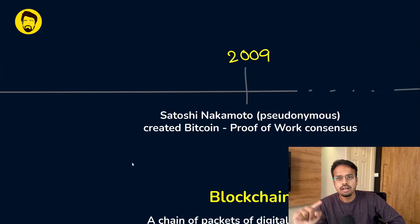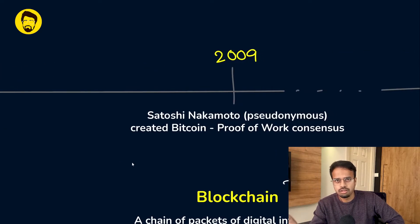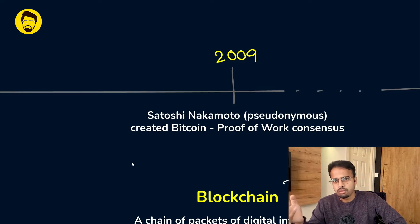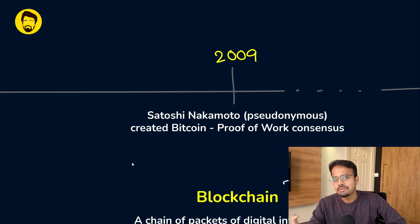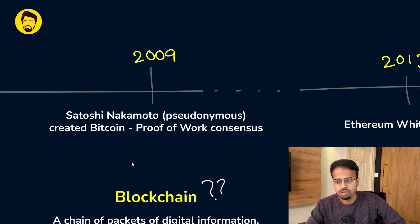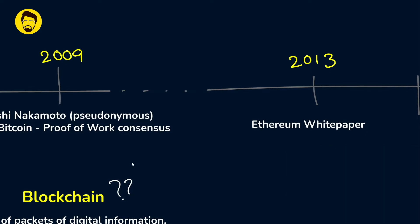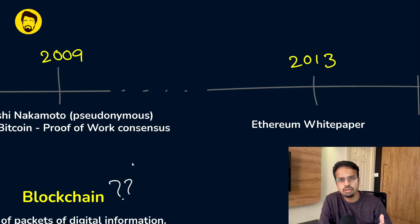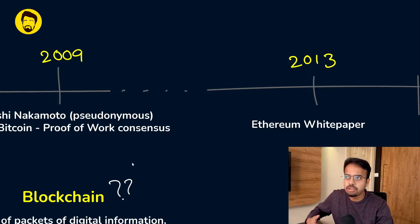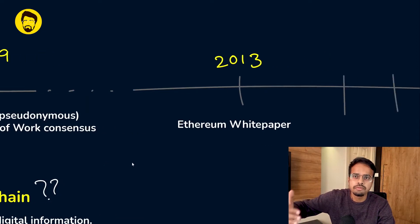Then in 2009, a pseudonymous person or group of people called Satoshi Nakamoto launched the Bitcoin white paper and published the proof-of-work consensus — that's when the true journey of all these cryptocurrencies came into light. Then in 2013, Vitalik launched the Ethereum white paper, which gave additional benefits like not only storing transactions but also storing data like smart contracts and the ability to build applications on top of the existing blockchain.